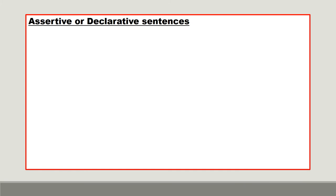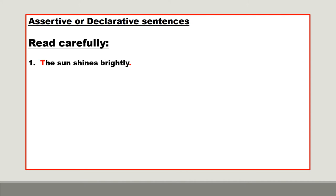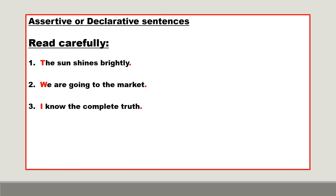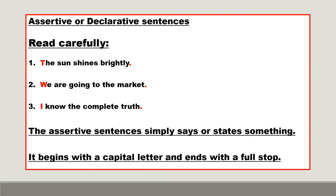Assertive or declarative sentences. These sentences simply say or state something. Read carefully: 'The sun shines brightly.' 'We are going to the market.' 'I know the complete truth.' These are all assertive sentences. The assertive sentence simply says or states something. It begins with a capital letter and ends with a full stop.